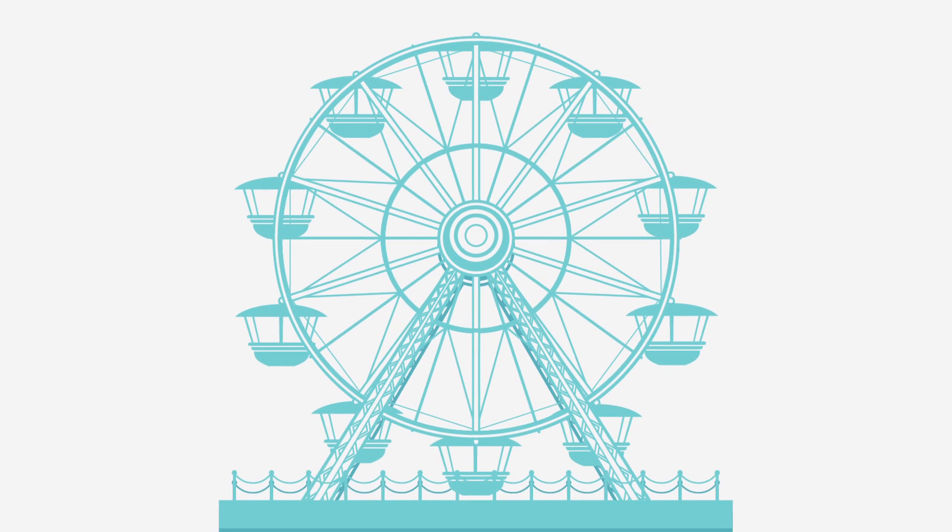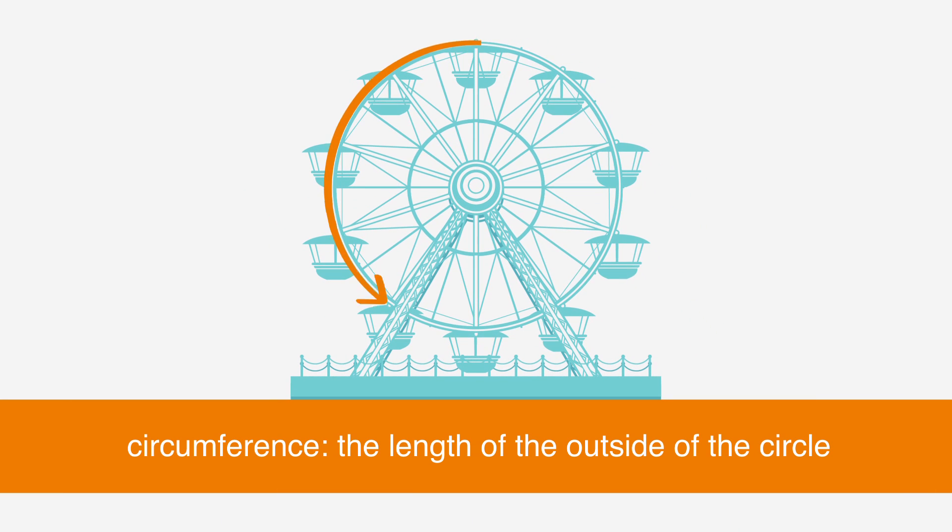The other thing that the ACT may ask you to do is to find the circumference of a circle. The circumference of a circle is the length of the outside of the circle. You'll need to have the radius of the circle to find the circumference. Once you have it, you just need to plug it into the equation.